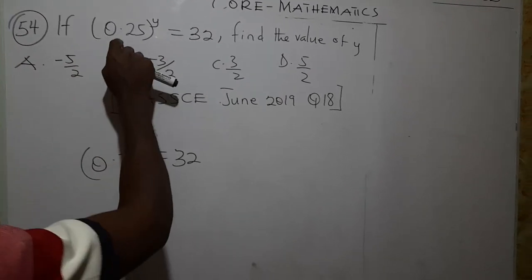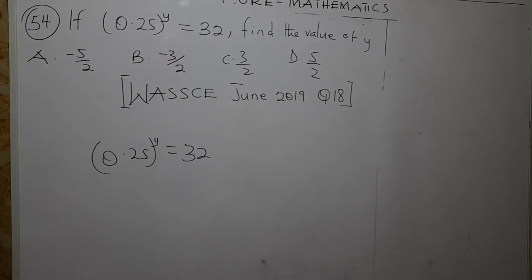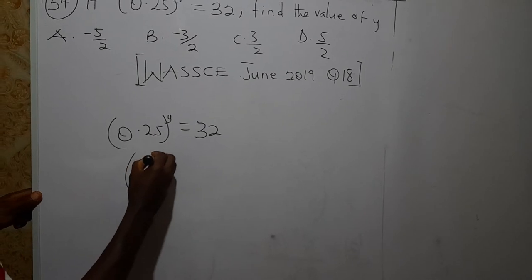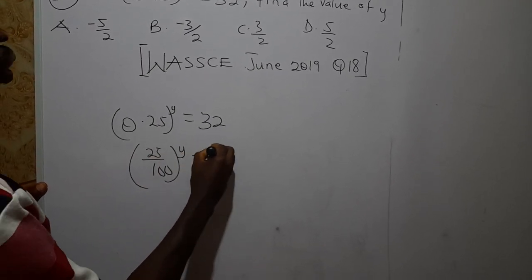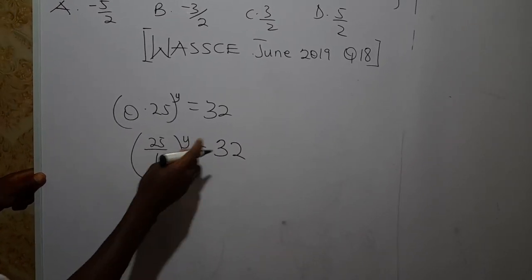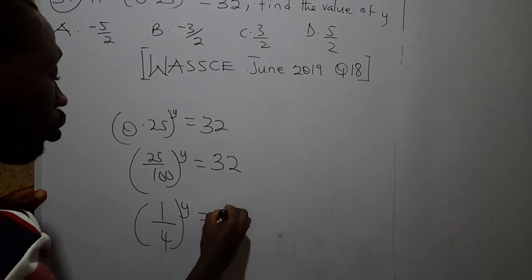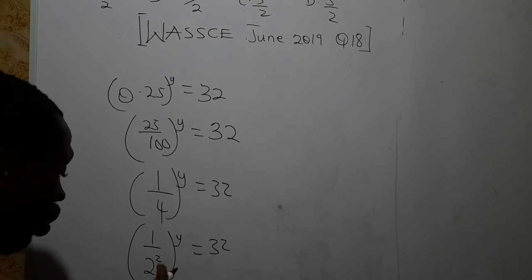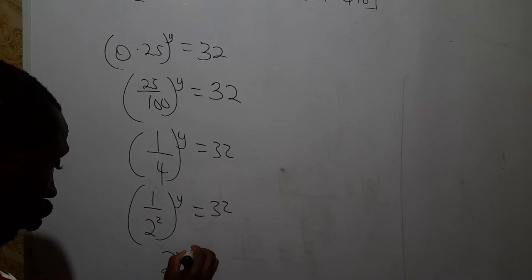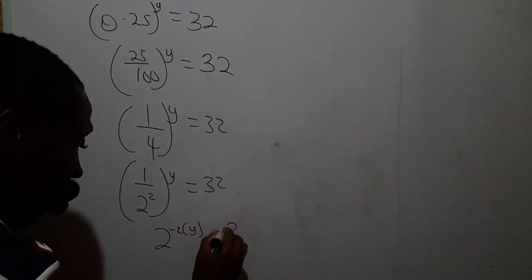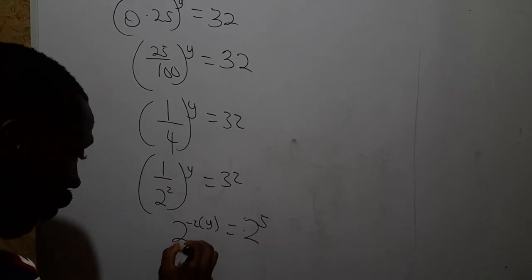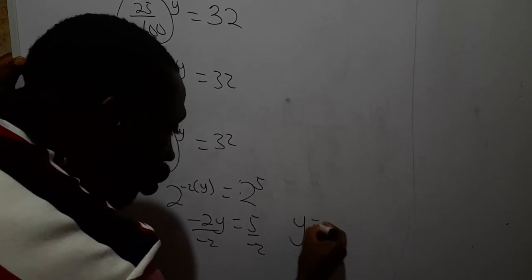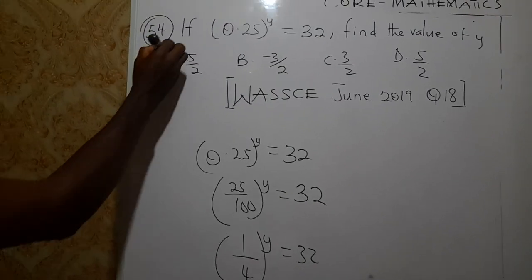WASSCE June 2019, objective question number 18: if 0.25^y = 32, find the value of y. We write 0.25 = 1/4 = 1/2^2, so (2^(-2))^y = 2^5, giving -2y = 5, so y = -5/2. The correct answer is B.